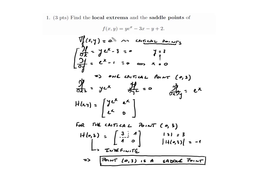The critical points are the ones where the gradient of f is equal to zero. In this gradient we have the partial derivative with respect to x and the partial derivative with respect to y. If you take these partial derivatives and set them to zero, you have two equations in two unknowns.